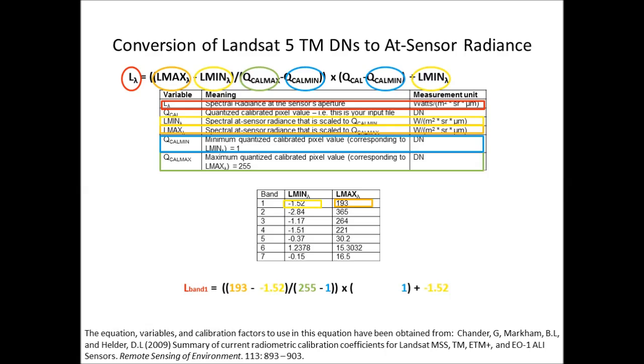This leaves us only one more variable that we haven't accounted for yet—the QCal. If you look at what this is in the first table, this is the digital number of your input file. This is the value essentially that we are going to correct for.